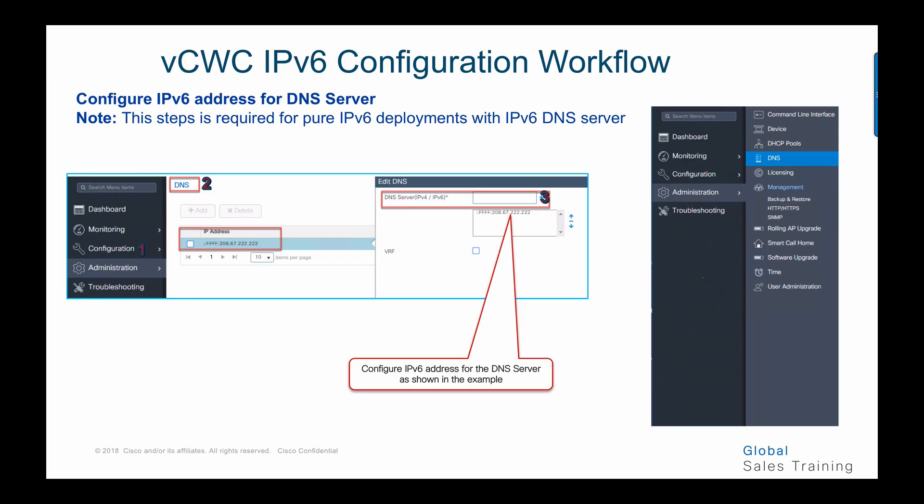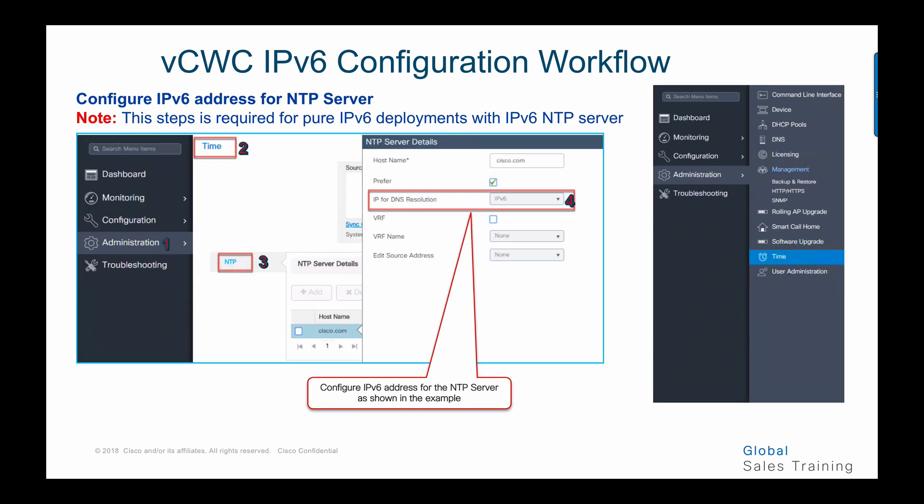Next, this step shows how to configure an IPv6 address for the DNS server, an optional step for pure IPv6 deployment. Go to the global menu, choose DNS, select the administration tab, choose DNS, and enter the IPv6 address for the DNS server.